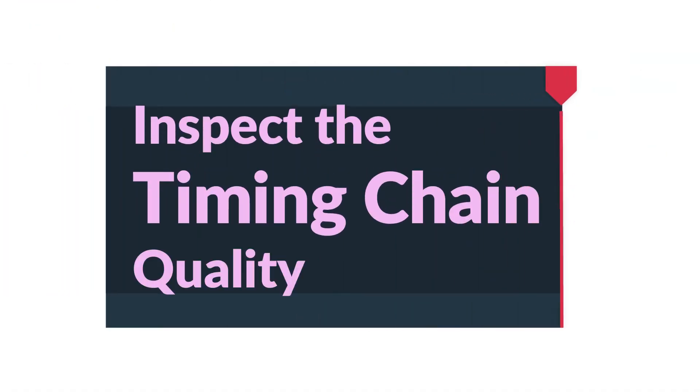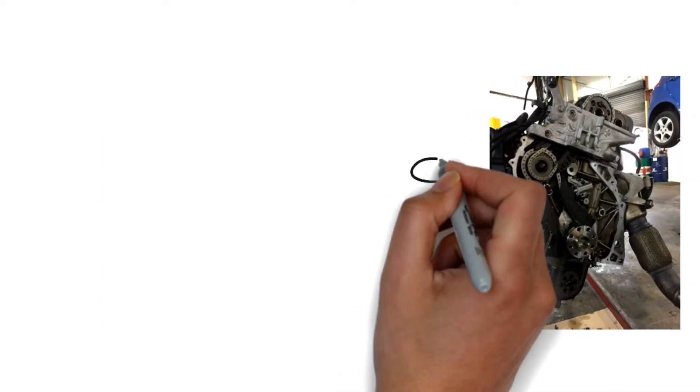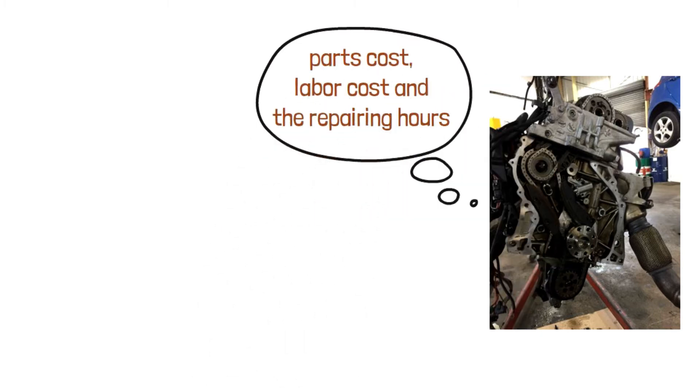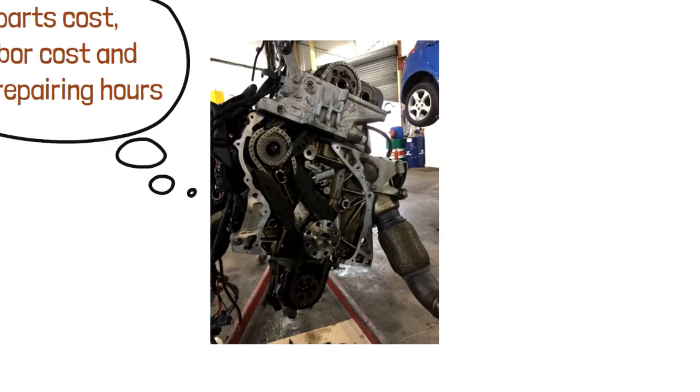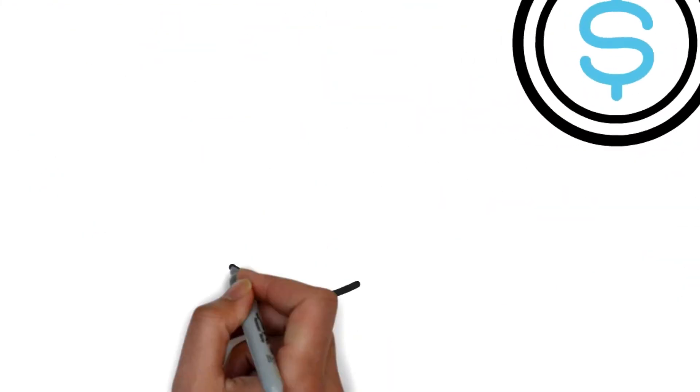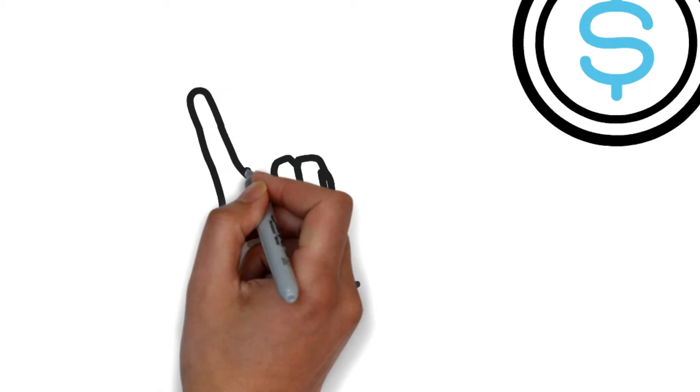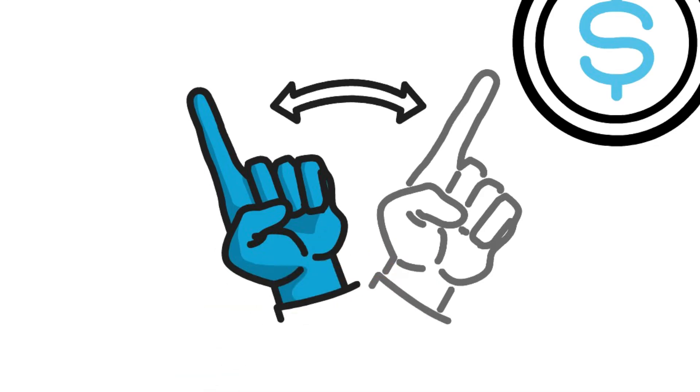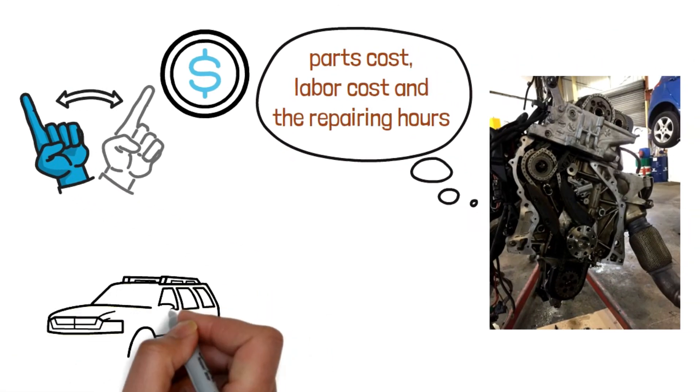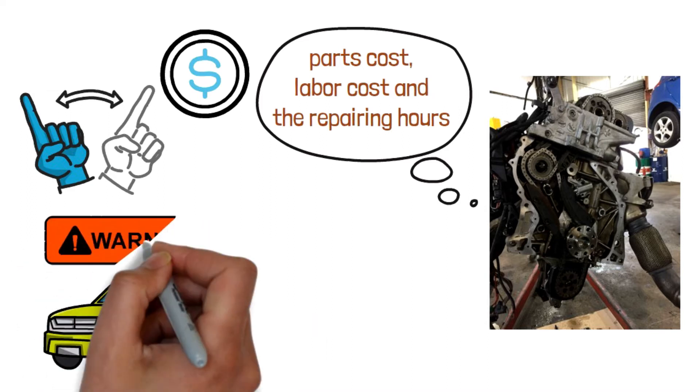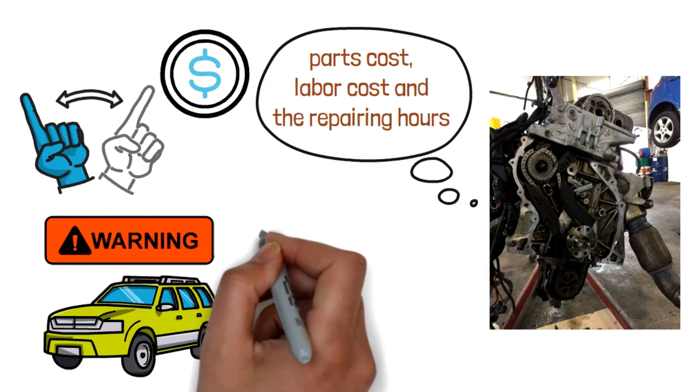Alright, since we talked about the cost of timing chain replacement, we have to understand that the overall cost includes the parts cost, the labor cost and the repairing hours. Especially, the labor cost and the repairing time is so high, some people seek to find the cheaper price timing chain parts. To be honest, blindly go for the cheapest price is not a clever choice. Sometimes, you think you have bargained a great deal with beautiful price. But truth is, you just put the whole timing chain system in the dangerous with the crap parts.